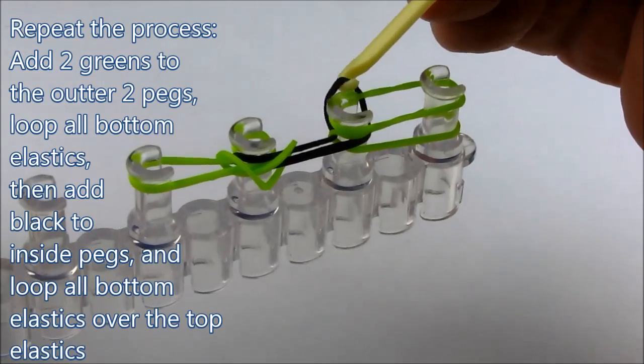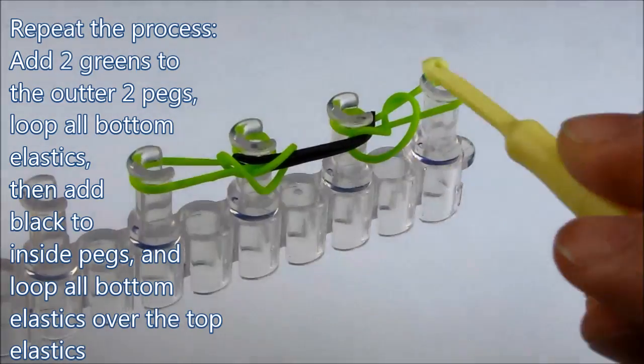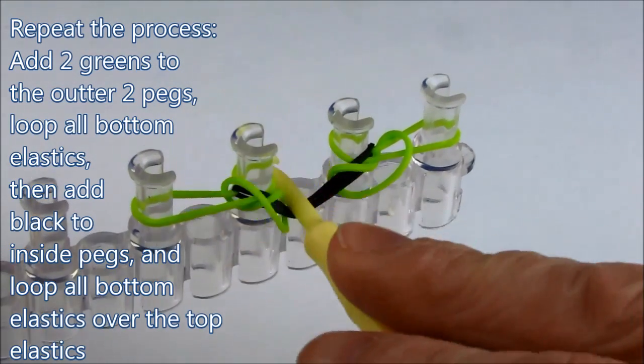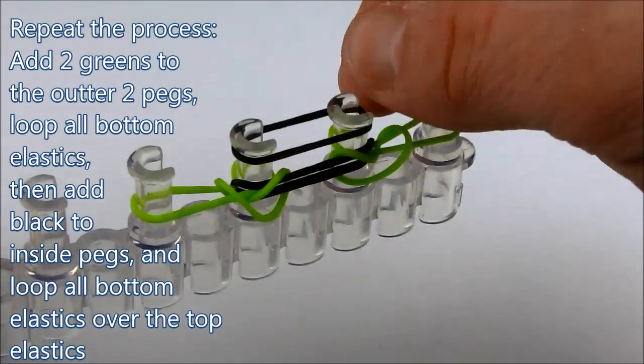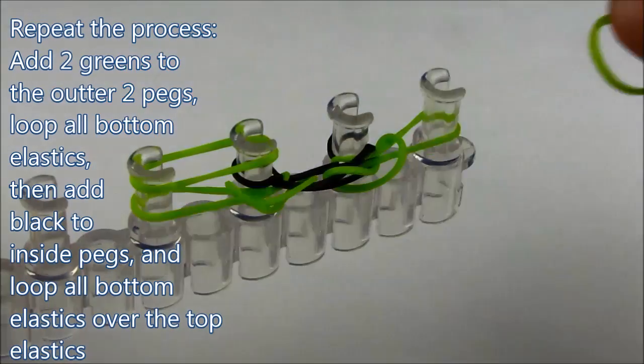And once you are finished looping there should be 1 elastic on each peg. And now we want to repeat again with the black and then the green on the outside.